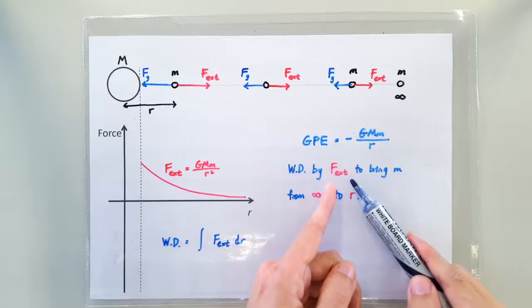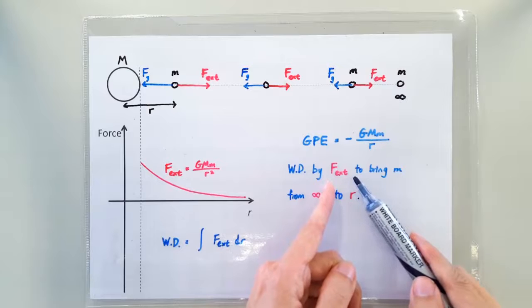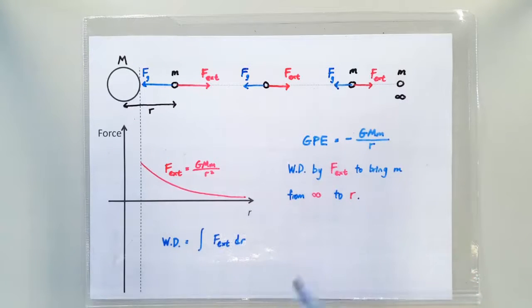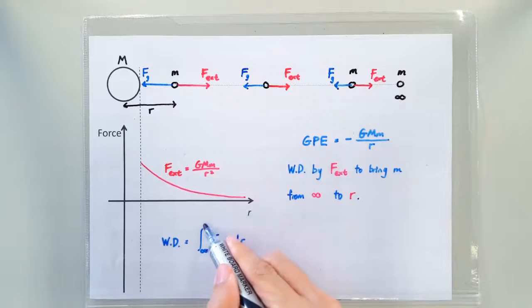If the external force was a constant force, then the work done would simply be the external force times the distance, right? But because the external force is not constant, we have to do an integration over the distance R. So we are bringing it from infinity to the position R, so we will be integrating from infinity to the position R.